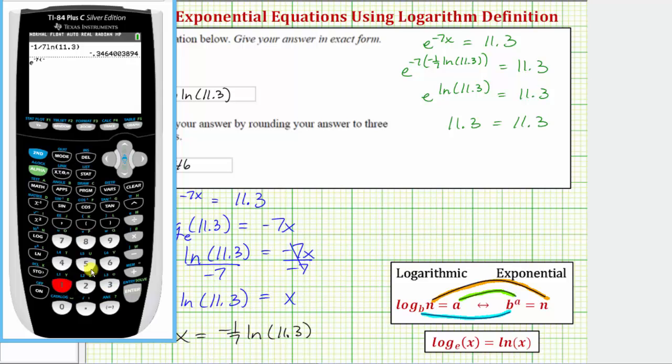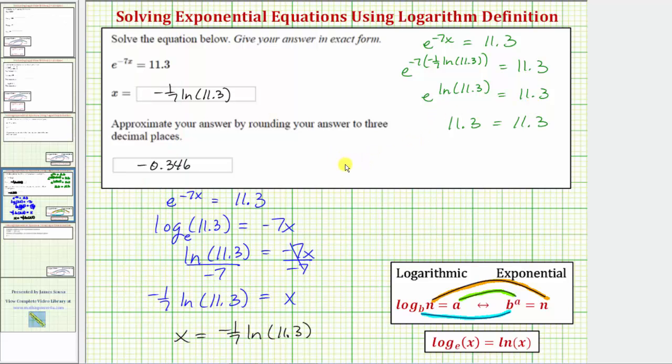Natural log 11.3, close parenthesis for the natural log, and close parenthesis for the product, and enter. And notice how we do get 11.3, verifying our solution is correct. I hope you found this helpful.